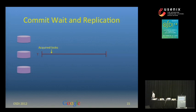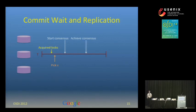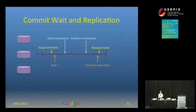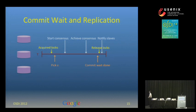Commit wait interacts with replication. With three replicas, we acquire locks at one replica, pick timestamp S, start our consensus algorithm — we use Paxos — achieve consensus, check that commit wait is done, then release locks. We allow clients to replicate data across the country or across the globe, so 100 millisecond latency to achieve consensus will far dominate the cost of commit wait in the common case. It should also be noted that replication must be integrated with concurrency control — we can't notify the slaves that we've achieved consensus until after commit wait.